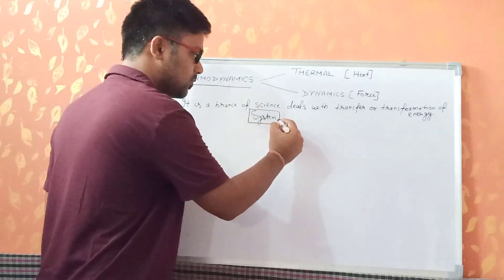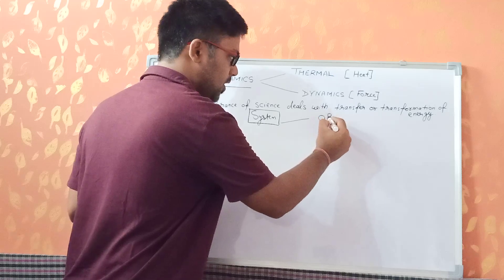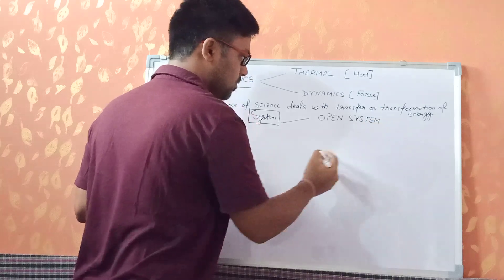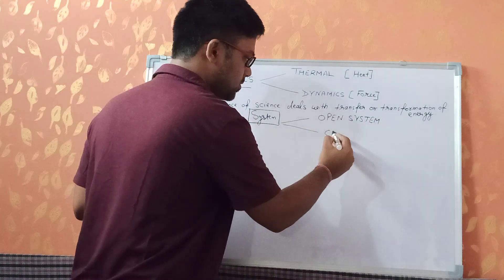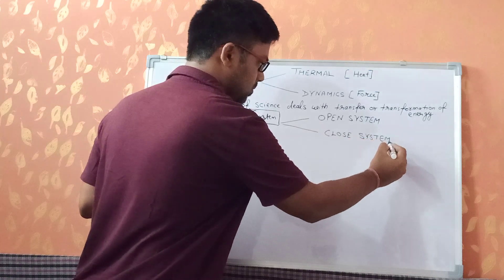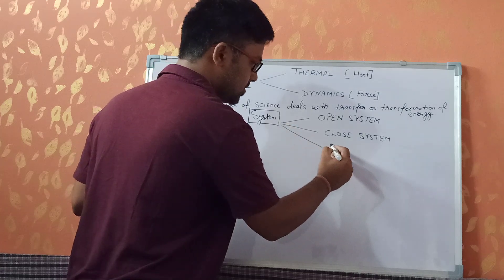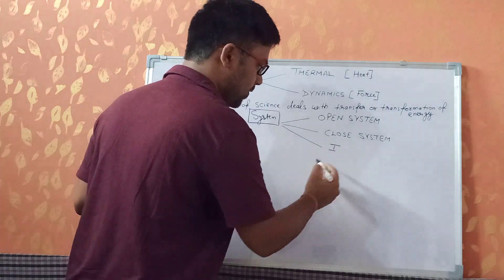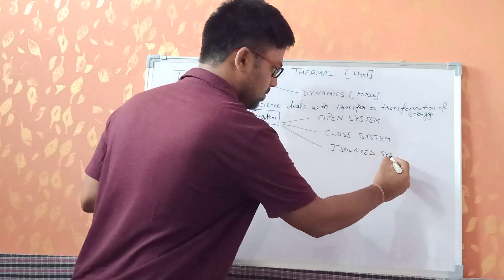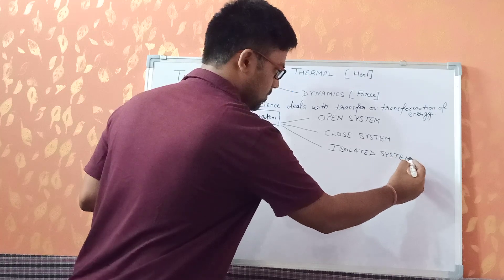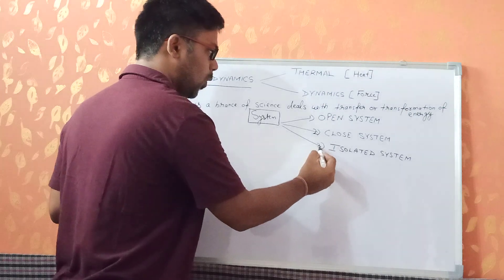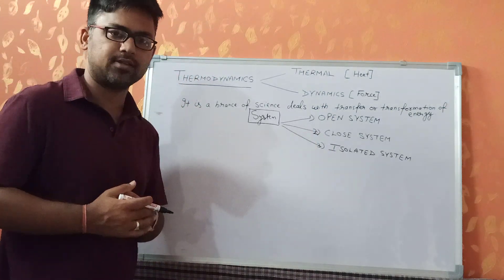A system is of different types. We have an open system, a closed system, and an isolated system. So basically we have three types of systems: open system, closed system, and isolated system.